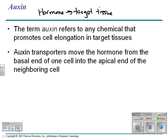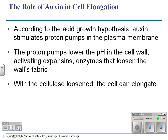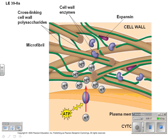Auxin is transported from cell to cell through auxin transporters. Auxin stimulates proton pumps in the plasma membrane and activates things called expansins. Expansins are enzymes that loosen cellulose in the cell wall. Looking at the cell wall with all these cross-linking fibers — when auxin comes in, these enzymes basically break the fibers, enabling the cell wall to lengthen.